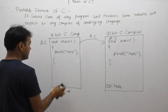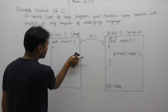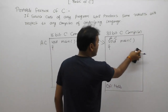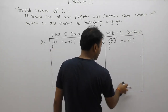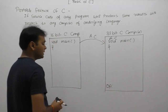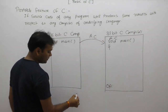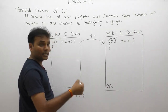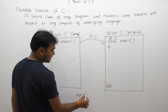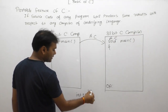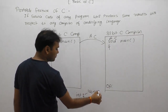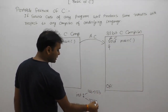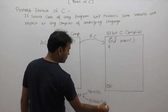Next, we test the non-portable case — in which situation is a C program considered non-portable? In C language, the size of an integer data type depends upon the compiler. In a 16-bit compiler, the size of integer is 2 bytes, whereas in a 32-bit or 64-bit compiler the size of integer is 4 bytes.